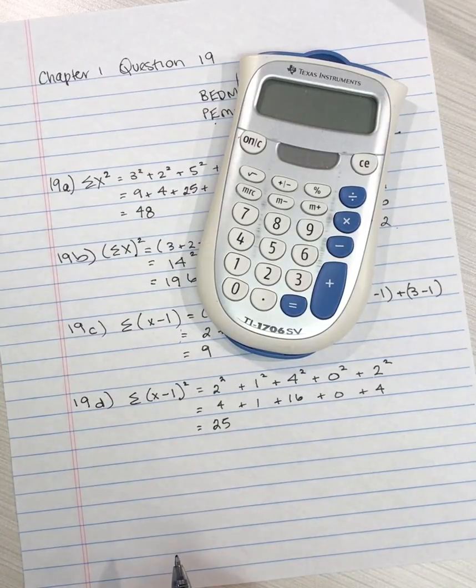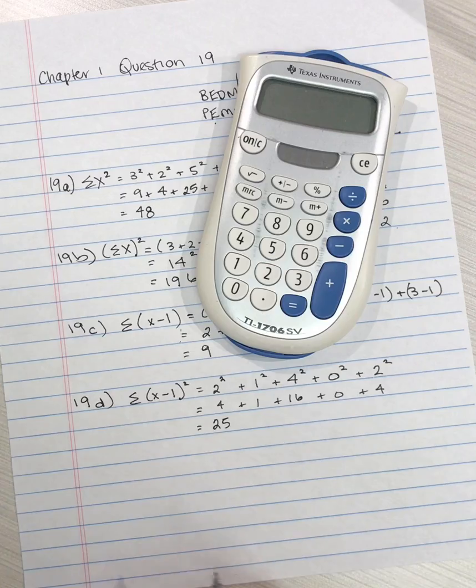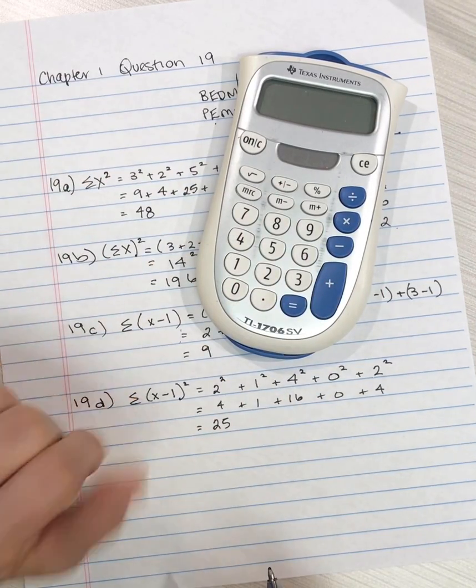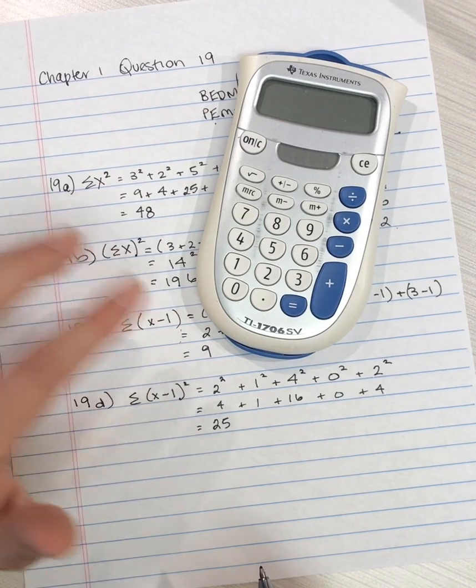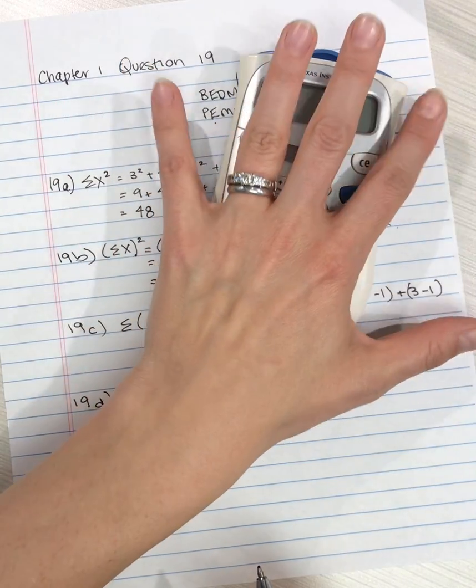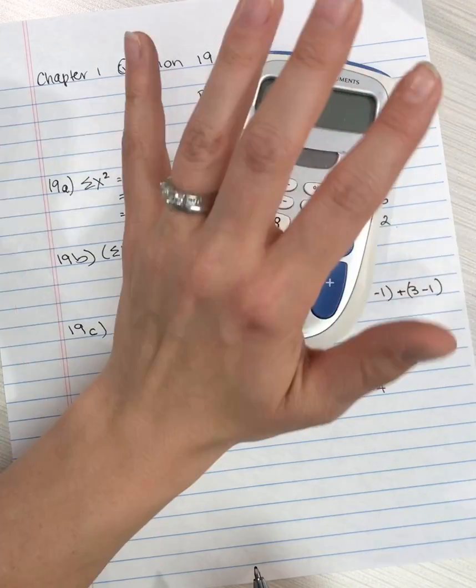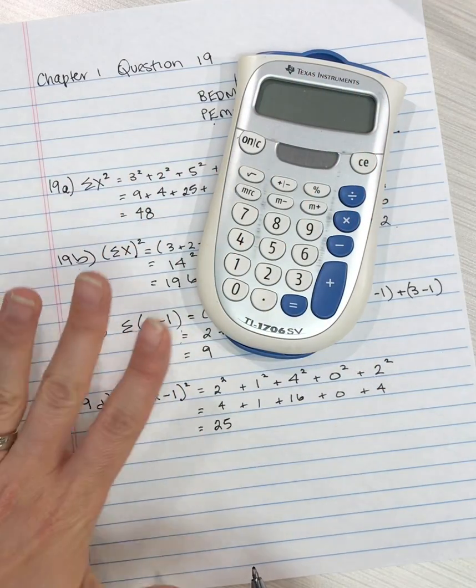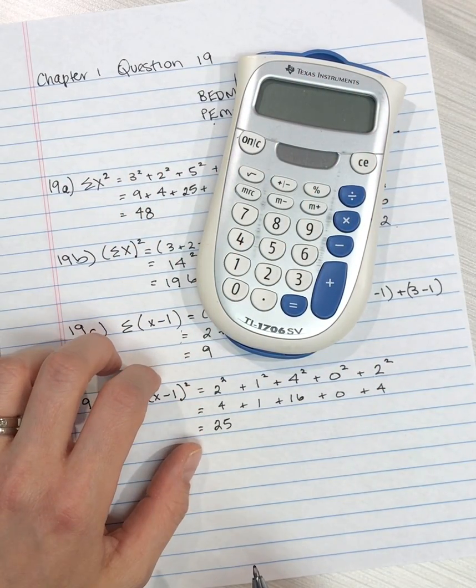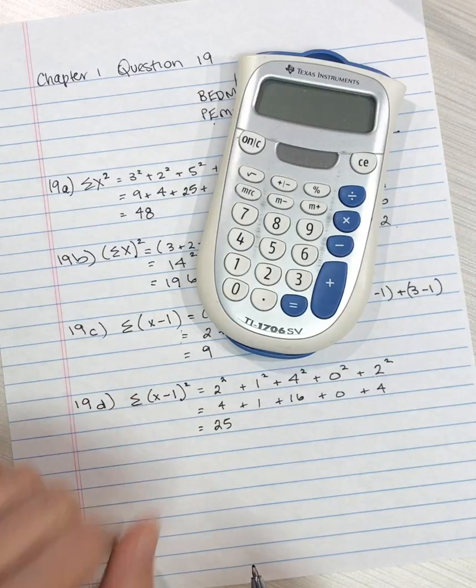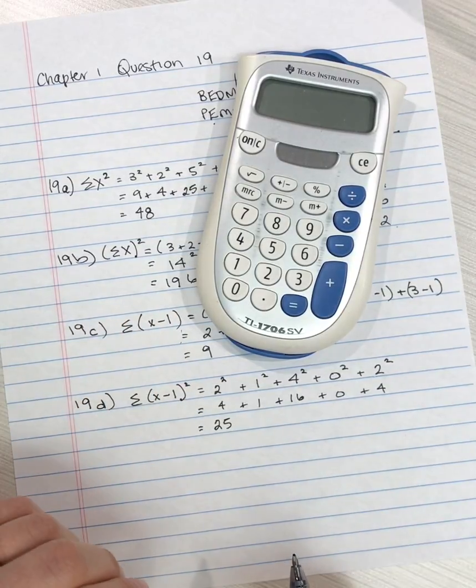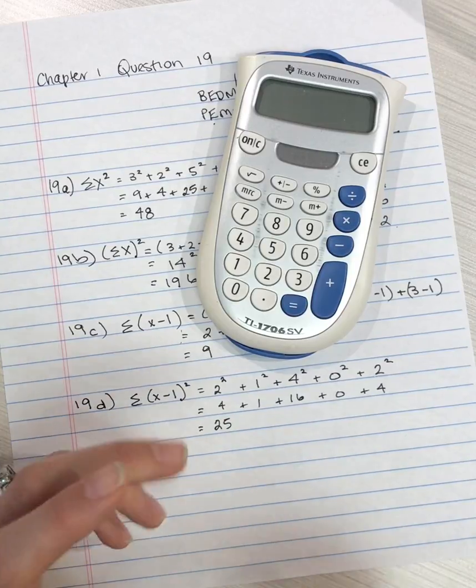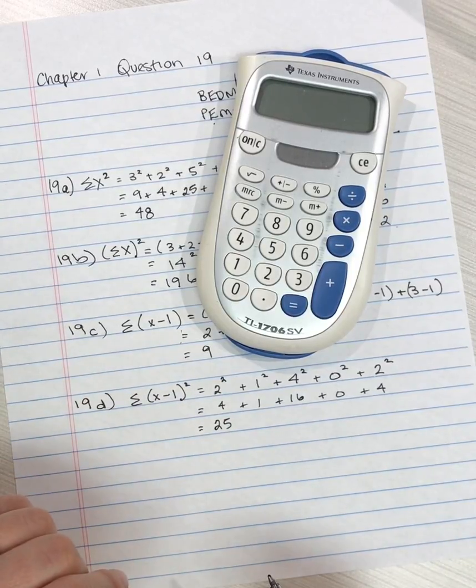However, I do caution you that sometimes our fingers slip, we press a button twice, or we miss-press something. And you're not going to notice that if you just overly rely on your calculator and you don't at least get a sense of how large that number should be. So that if the number is dramatically off, you have a gut sense that something's off and you can catch that mistake.